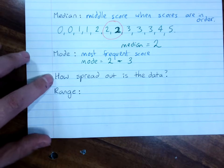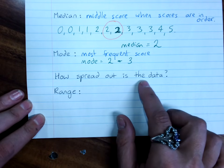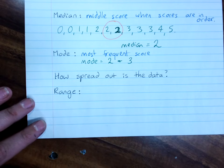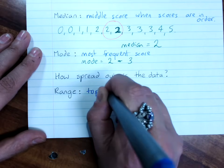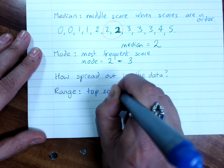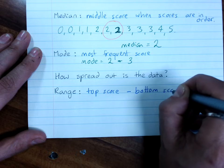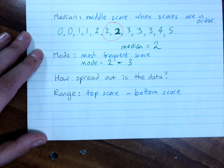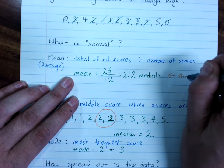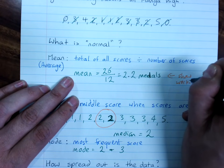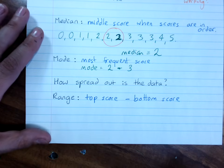Now the range isn't looking at how normal, or what is normal. The range is looking at how spread out the data is. And the range is the top score, or the largest score, minus the bottom score, or the smallest score. And so just like we've got to show working for the mean, we also have to show working for the range.